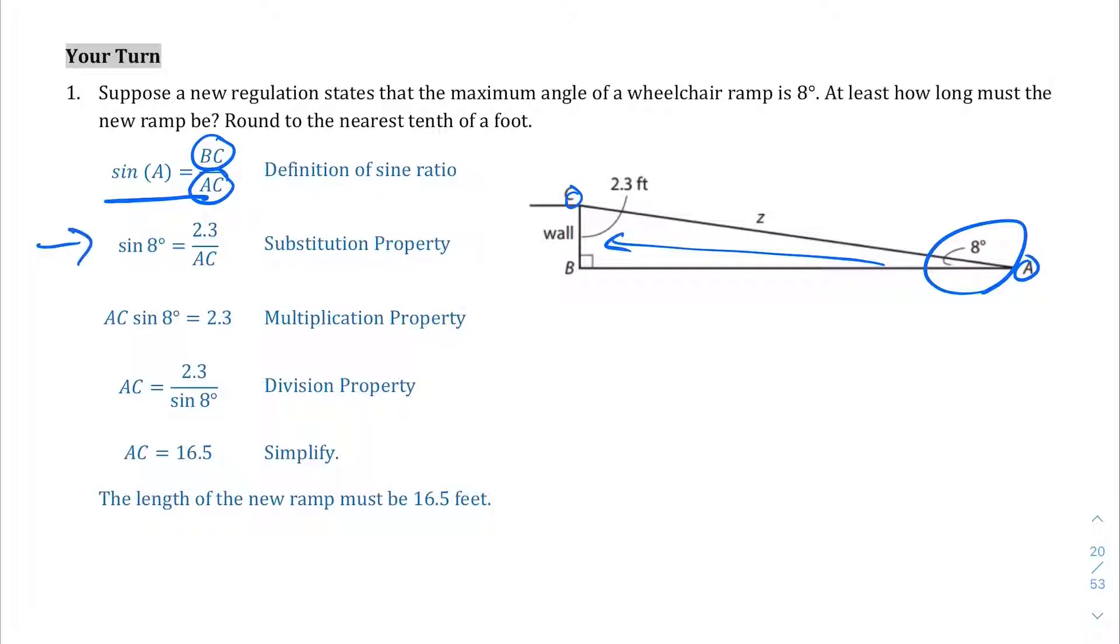And so, in this second section, they've plugged in the numbers. The sine of 8, which is the degrees right there that we are given, is going to be the wall, which is 2.3, over what we're looking for, AC. So, you use a bit of algebra, and you should come out with AC equals 16.5. So, the ramp has to be 16.5 feet.